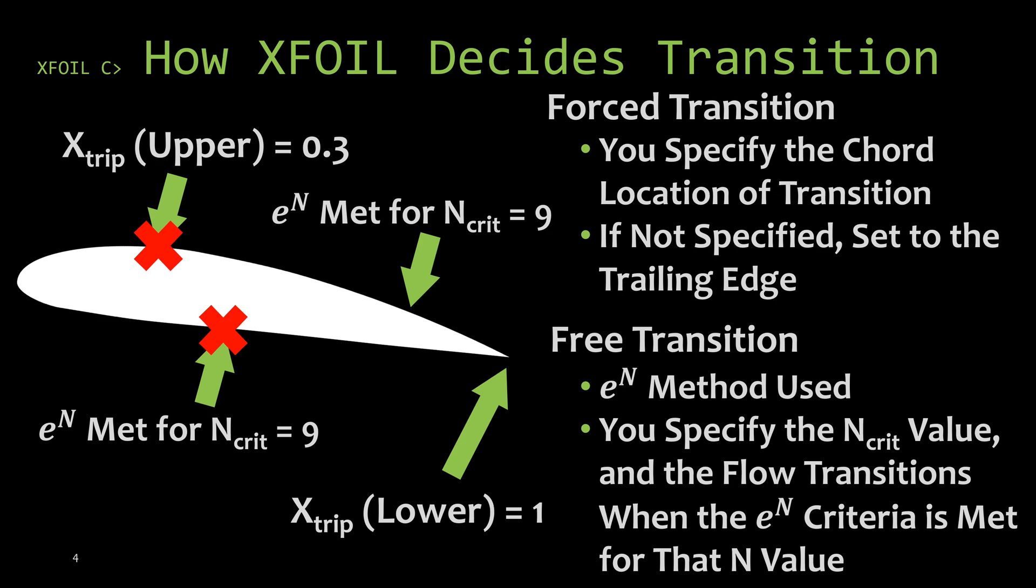For the free transition we specified the standard critical n value of 9 and so as you can see on the upper surface that's met towards the end of the surface whereas on the bottom surface it's towards the beginning. XFOIL will trip the flow when either of these criteria is met. So on the upper surface the forced transition is met before the free transition so it trips at the forced location. However on the bottom surface the free transition criteria is met way before our forced transition location and so it trips at that point.